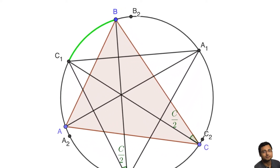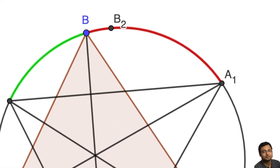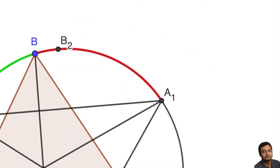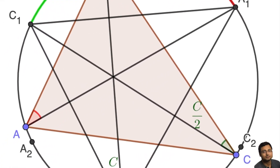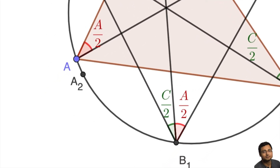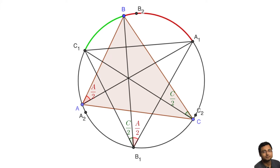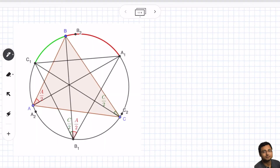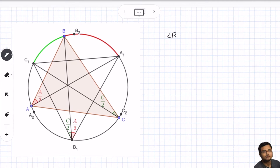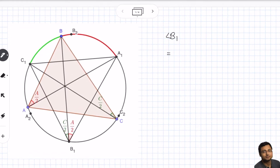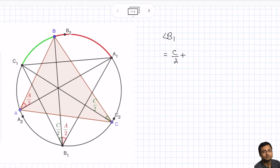Similarly, let's look at the arc B, A1. We can say that the two red angles are equal to A/2. Of course, angle B, A, A1 is equal to A/2 because AA1 is the angle bisector of angle A. And both of them are subtended by the same red arc B, A1. So we get the angle at B1 as A/2 plus C/2. So we learn that angle B1 equals C/2 plus A/2.